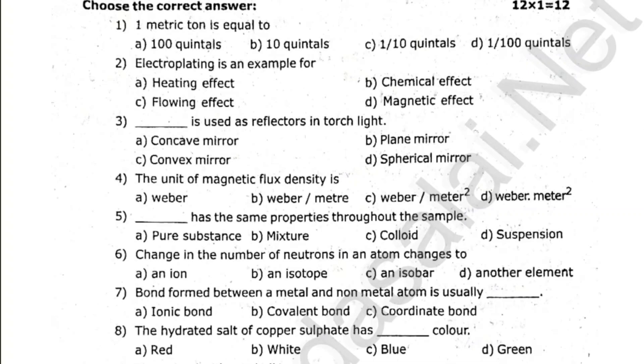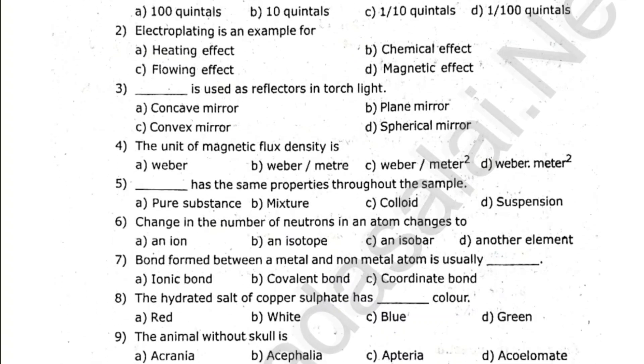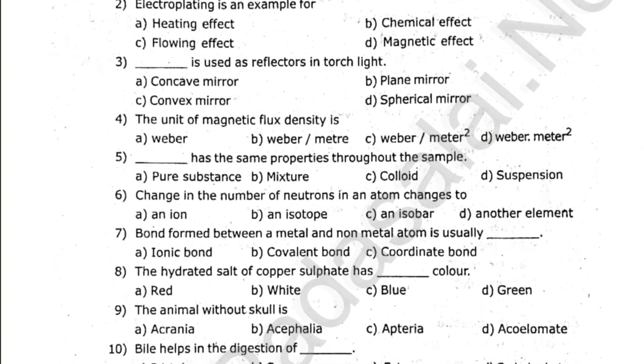One metric ton is equal to dash. Electroplating is an example for dash. Dash is used as reflectors in torch light. The unit of magnetic flux density is dash.